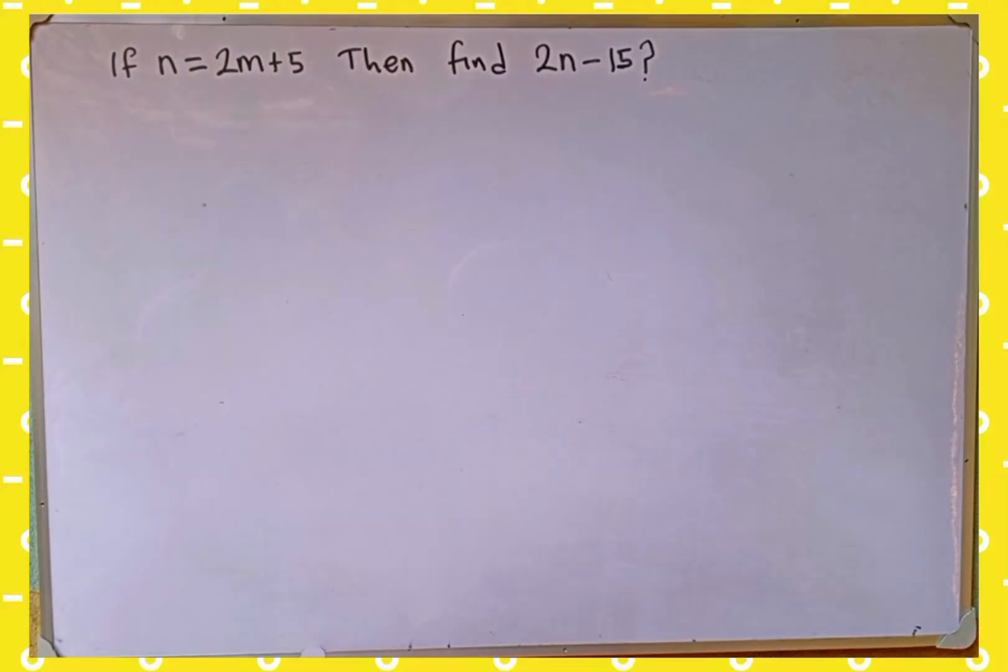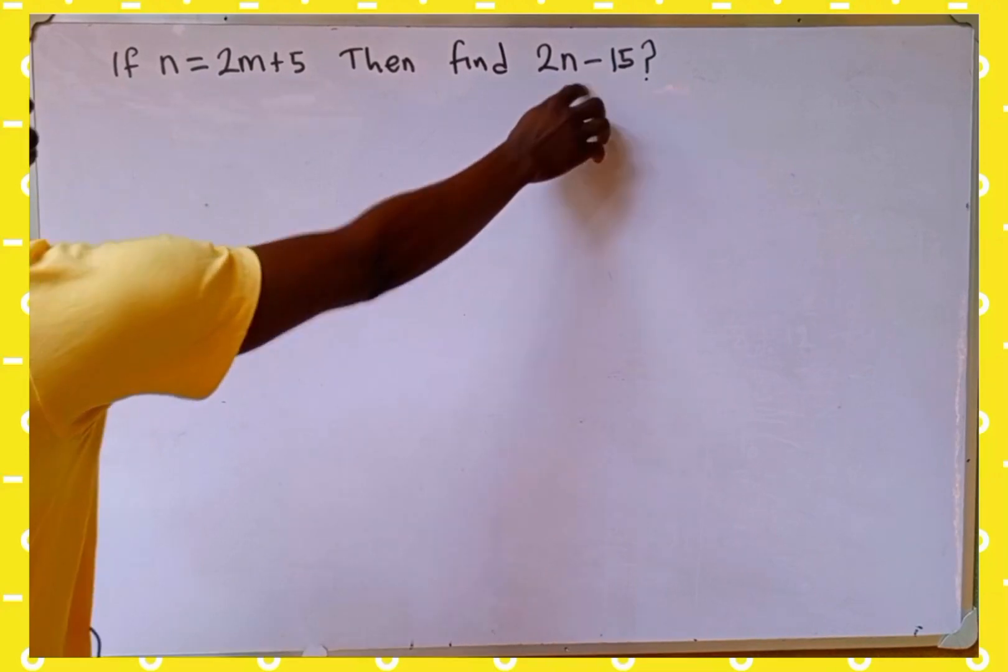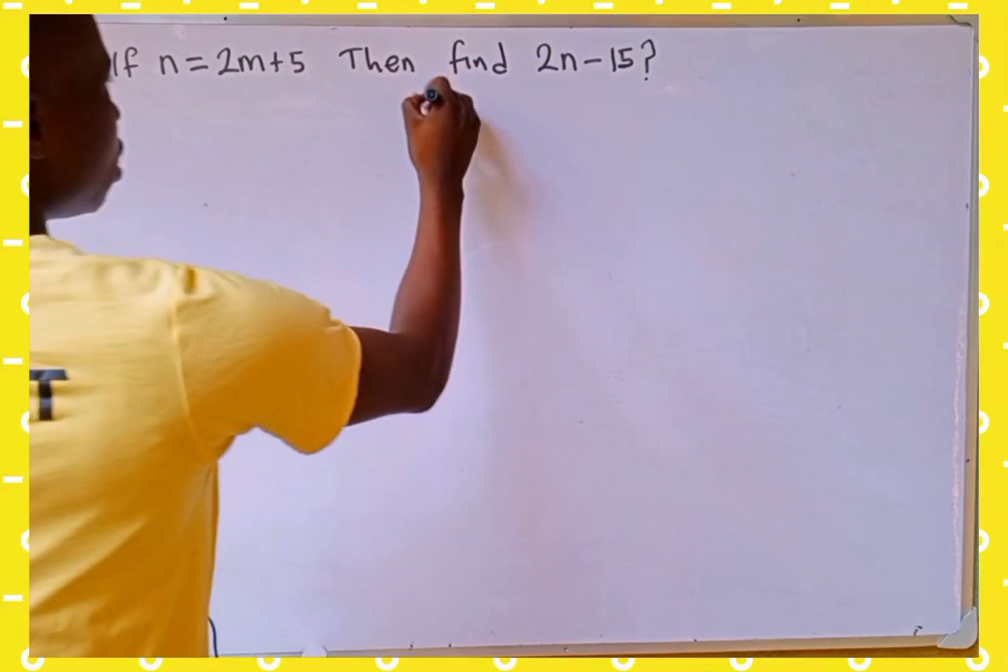So from this question, the value of n is given already as 2m plus 5 and we are looking for the value of 2n minus 15. So let's get started. Solution.